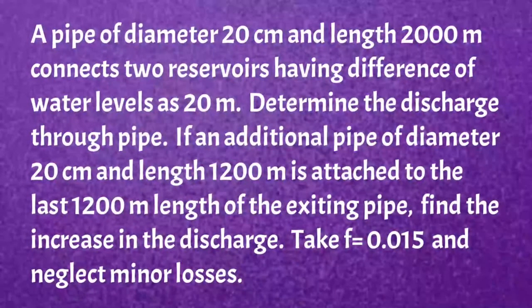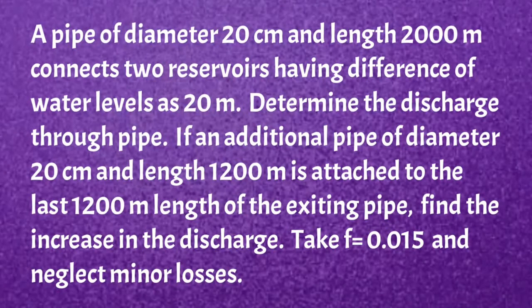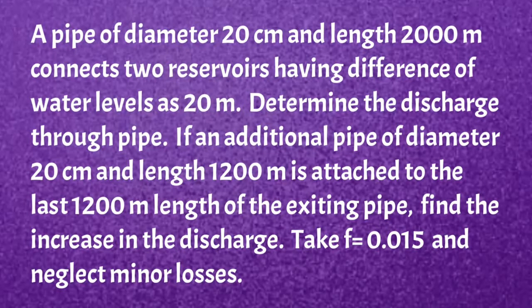So first, I will read the given problem. A pipe of diameter 20 cm and length 2000 m connects two reservoirs having a difference of water levels of 20 m. Determine the discharge through the pipe. If an additional pipe of diameter 20 cm and length 1200 m is attached to the last 1200 m length of the existing pipe, find the increase in discharge. Take F equal to 0.015 and neglect minor losses.